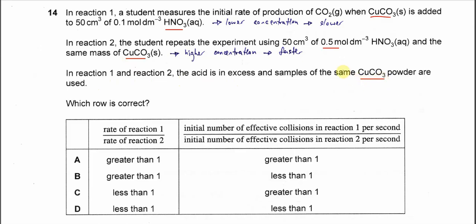From here, we know that in reaction one, because the concentration of nitric acid is lower, the reaction rate is going to be slower.